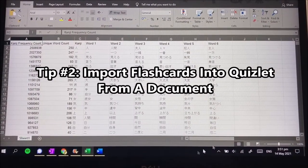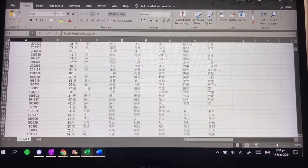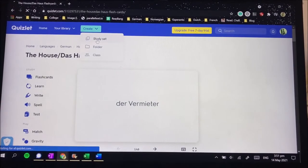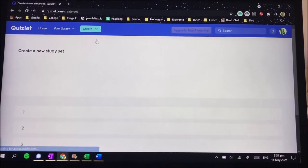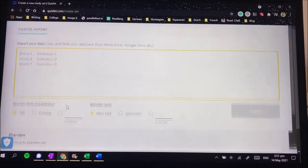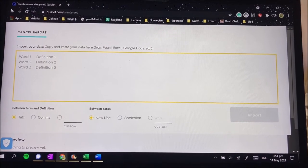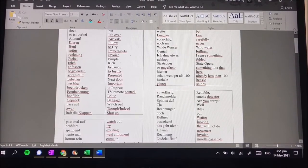Tip number two is to put your flashcards in a document and then import them into Quizlet. This can be done in Excel or in Word. Not only is it actually quicker, but you'll always have a hard copy as well, just in case you don't have the internet or if something happens to your Quizlet account, or if you just need to find a particular flashcard super fast.